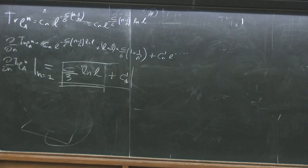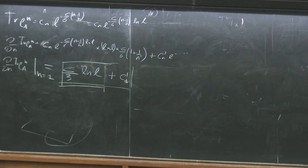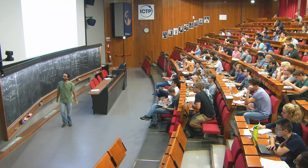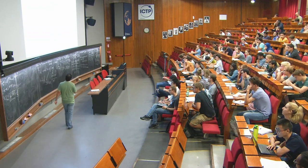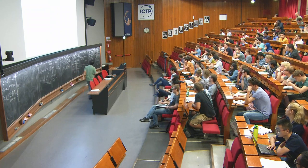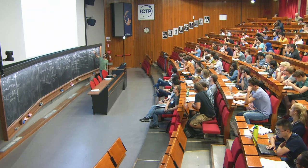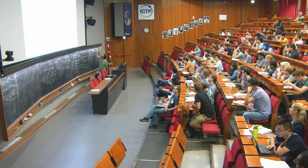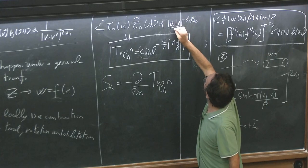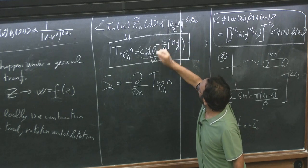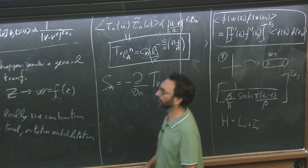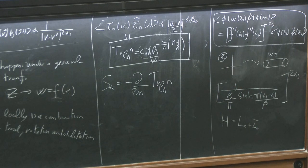c₁ is 1 because Tr(ρ) equals 1. As for the UV cutoff: when I write the two-point function, it's proportional, and if you want c_n to be dimensionless you put a UV cutoff there. All lengths are measured in terms of the UV cutoff. Alternatively, you can say that the UV cutoff is absorbed into this non-universal constant.